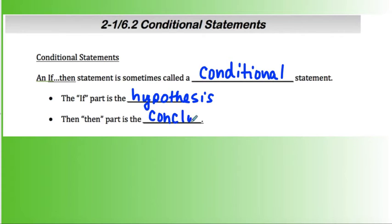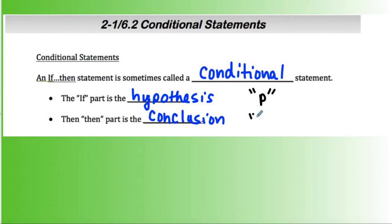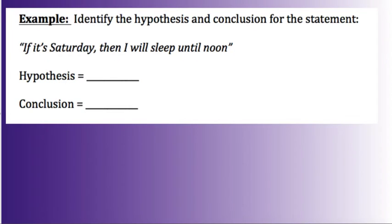When writing these statements, we sometimes use symbolic notation. For the hypothesis we use the variable p, and for the conclusion we use the variable q. I'm going to show you where that comes into play in a few minutes.